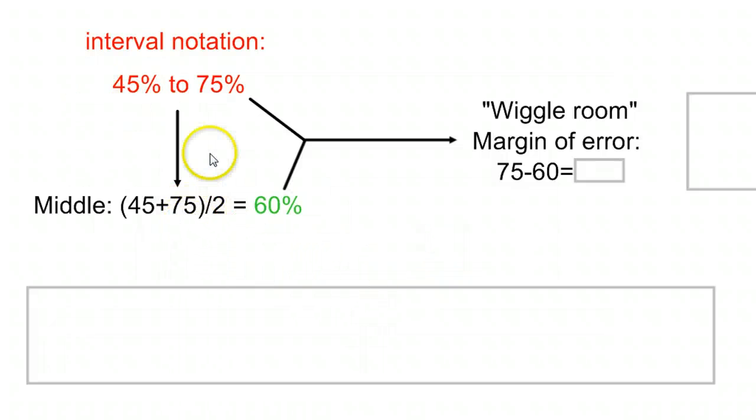And to do that, you just pick one of your two end points. It doesn't really matter which one because this is in the middle. Let's say that high end, that 75% minus the 60% in the middle. And we're only going to vary by 15% on each side.